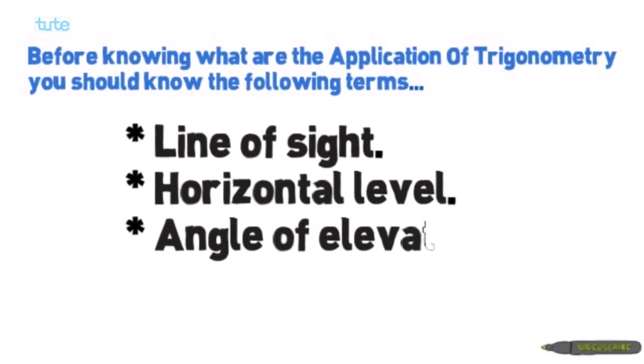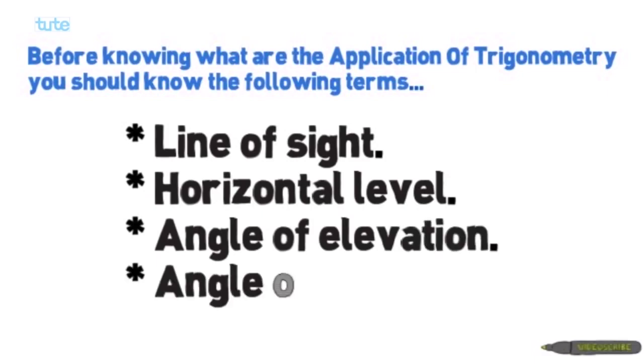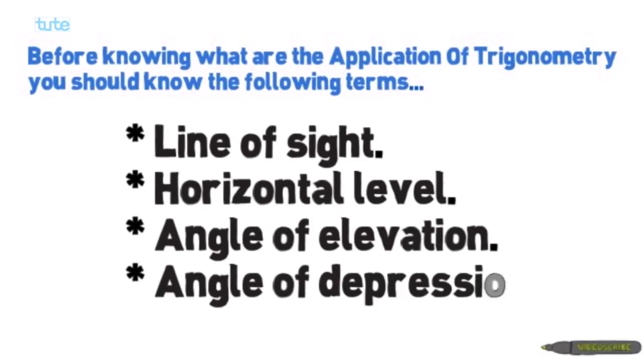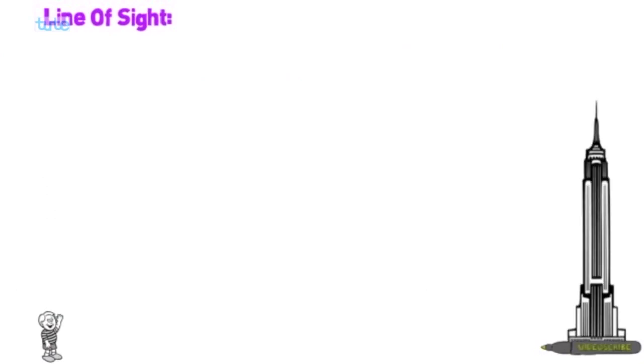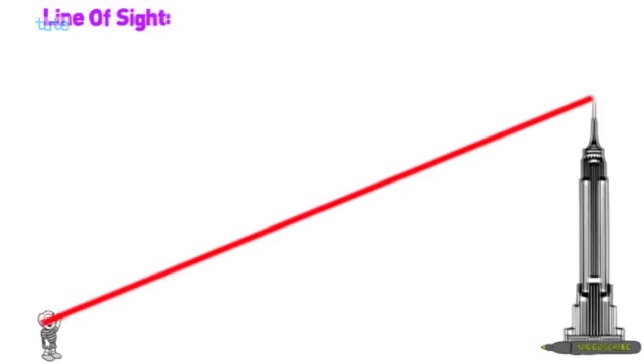And fourth, angle of depression. Let's see what do you mean by line of sight. Consider a boy standing on the ground and a tower which is at a certain distance — that boy is watching the top of the tower.